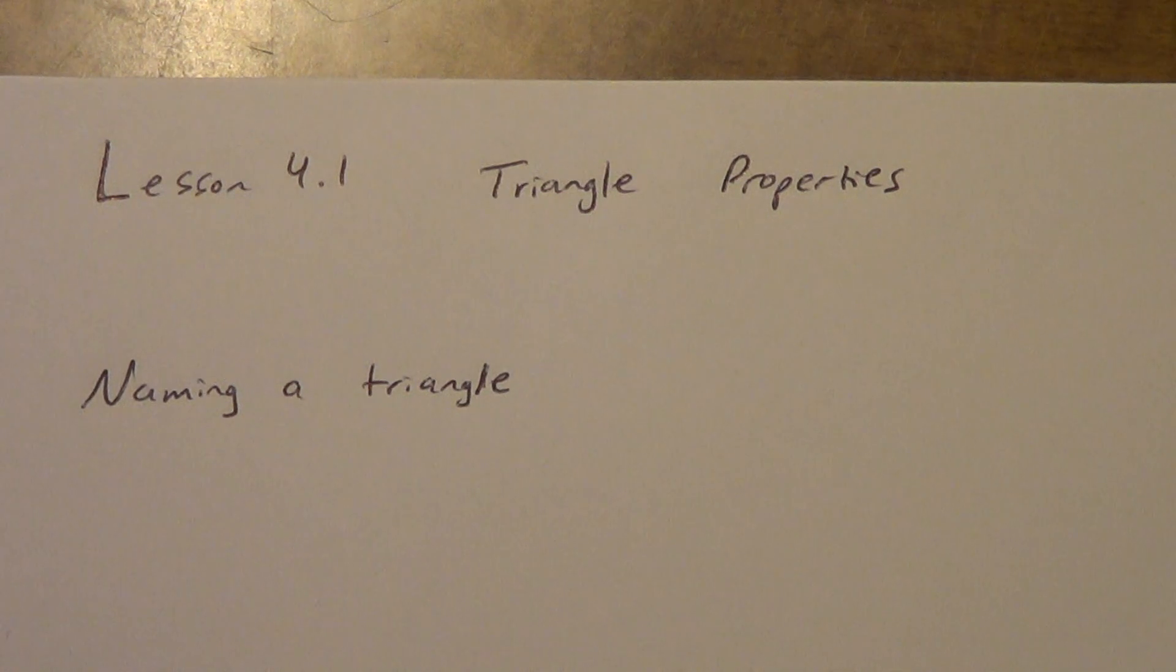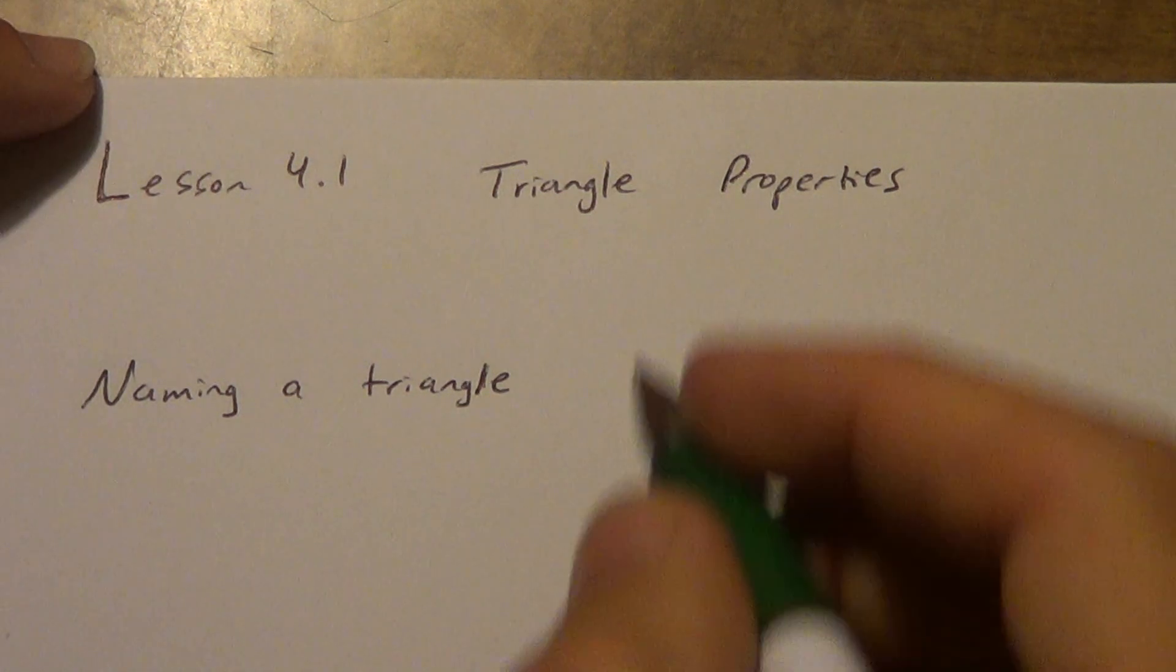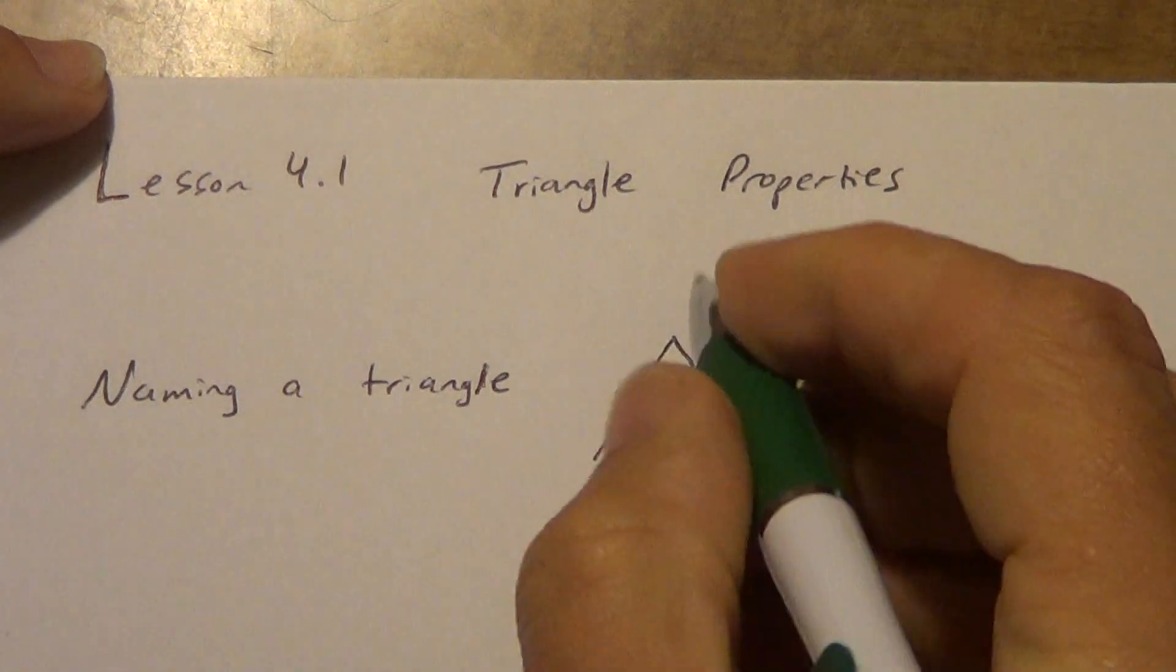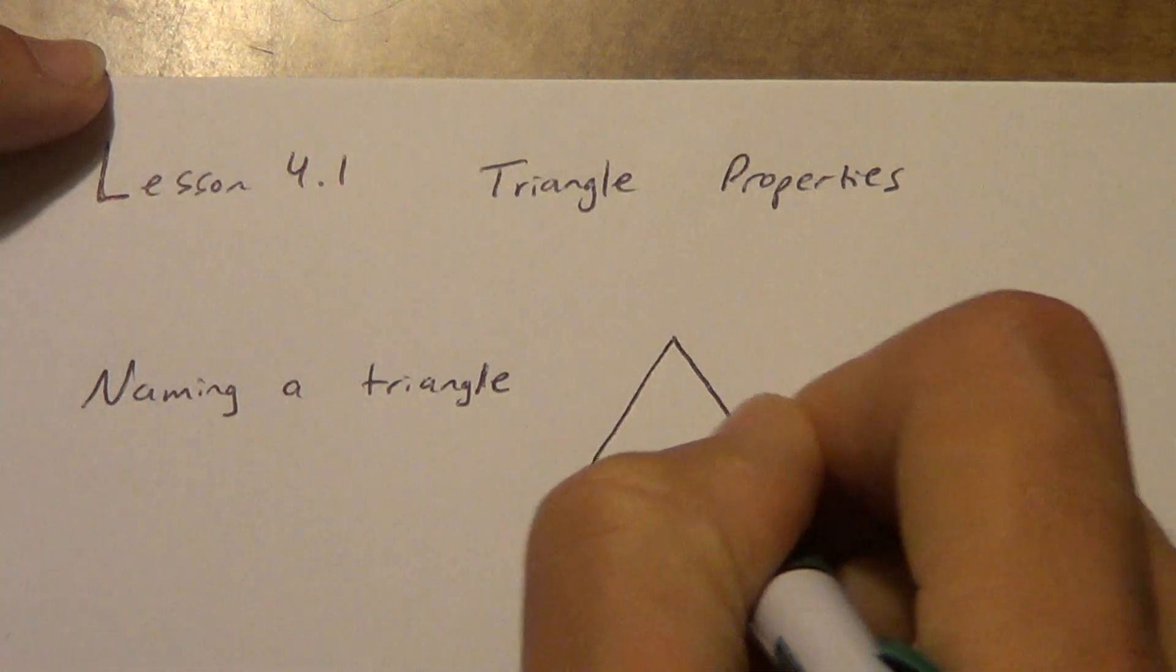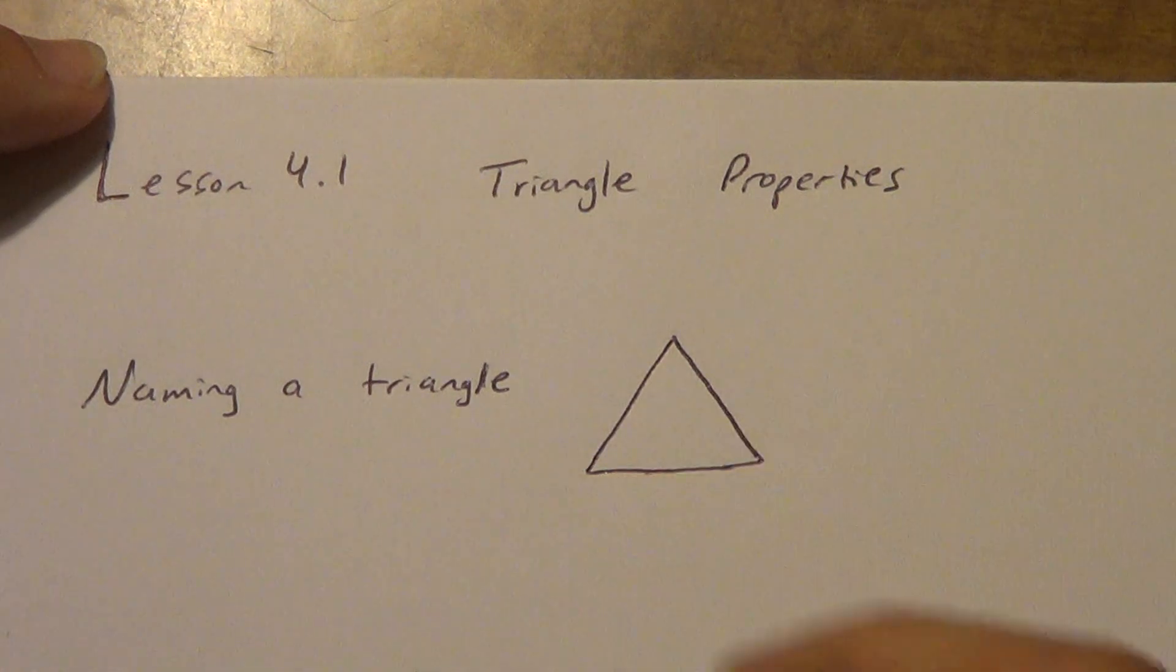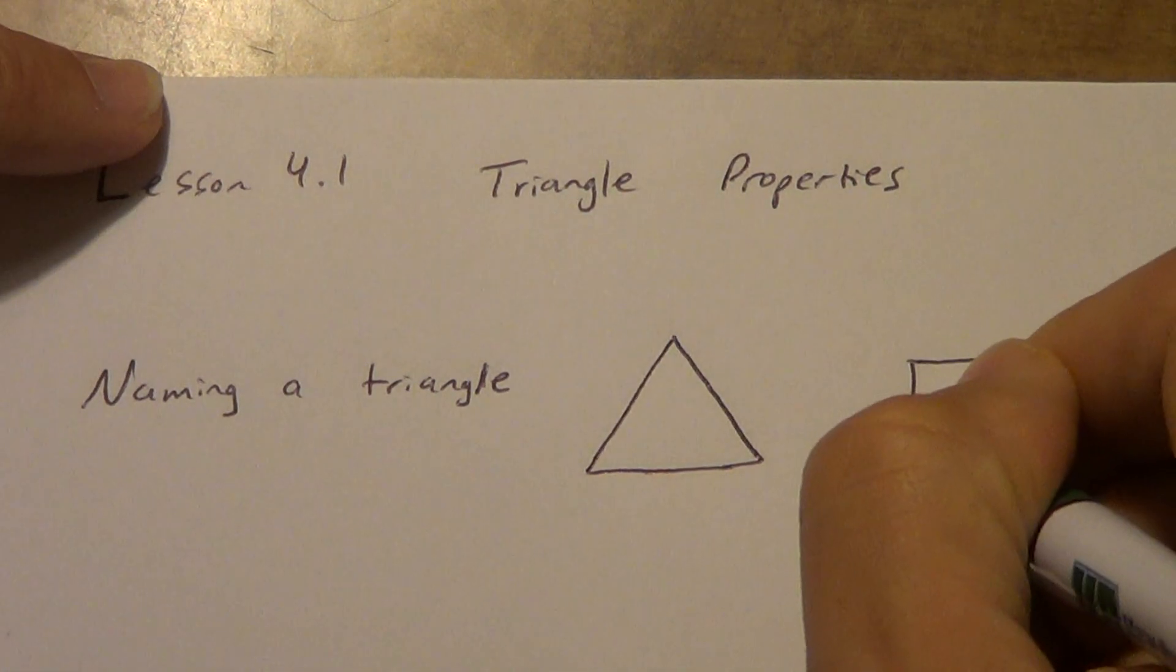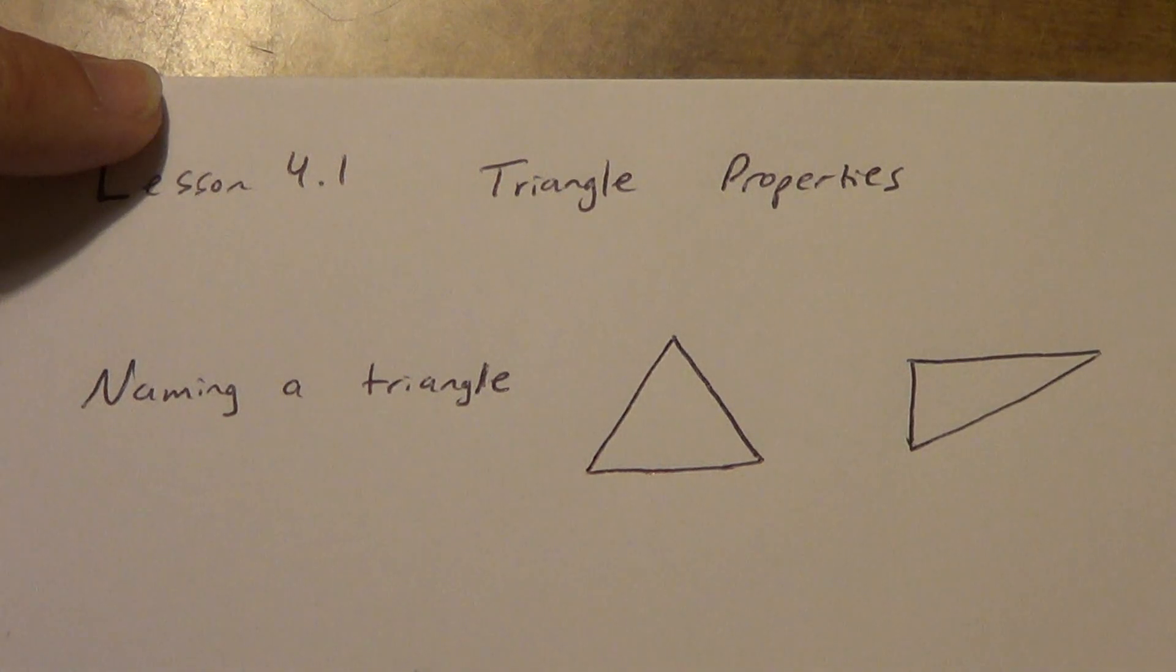So three sides, remember polygons have to be straight. They can't have gaps in them. They can't overlap the sides. The sides cannot intersect anywhere other than their endpoints. So we've got a triangle something like this. You've got a triangle that looks something like this. Okay, you've got other possibilities.